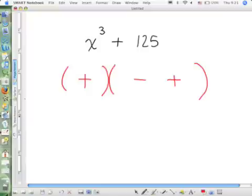Can it always be a plus, a minus, a negative? Listen. This first sign is always whatever is in the problem. The second sign is always the opposite. And the third sign is always plus. No matter what.